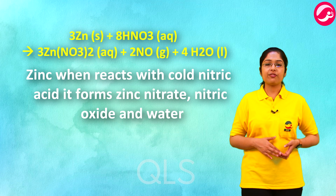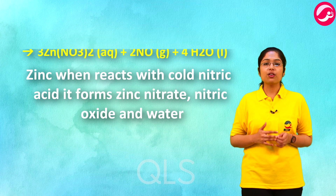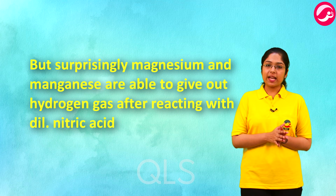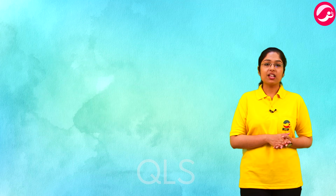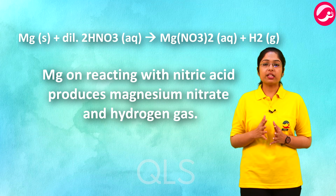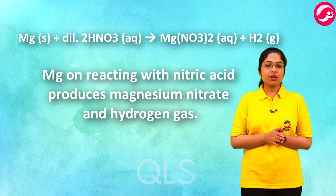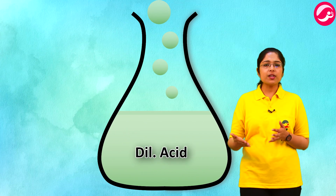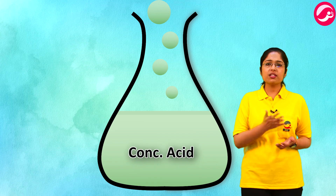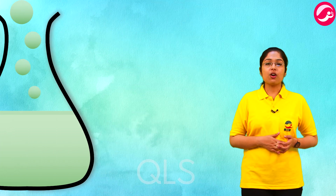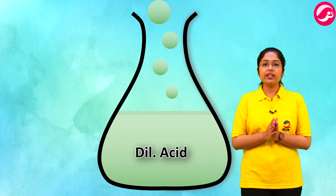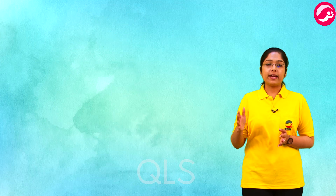For example, zinc when reacts with cold dilute nitric acid forms zinc nitrate, nitric oxide, and water. But surprisingly, magnesium and manganese are able to give out hydrogen gas after reacting with dilute nitric acid — magnesium on reacting with nitric acid produces magnesium nitrate and hydrogen gas. This works only with dilute acids, as metals which react with acids can react well with dilute acids only.